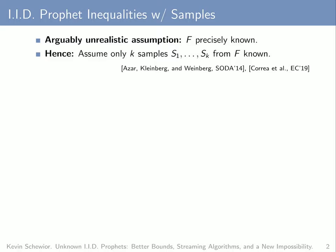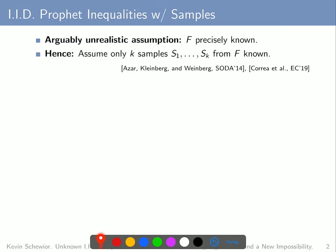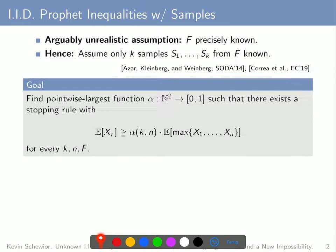What arguably makes results for this and related models less applicable in the real world is the strong assumption that the distribution f is precisely known. This strong assumption will be relaxed in the next model, where we assume only k samples from f are known, referred to as s1 up to sk. This precise model was introduced in an EC19 paper by a subset of the authors, though a similar assumption had been made before by Azar, Kleinberg and Weinberg in a SODA 2014 paper. The major goal of research into this problem has been getting a similar kind of guarantee as for the previous problem.